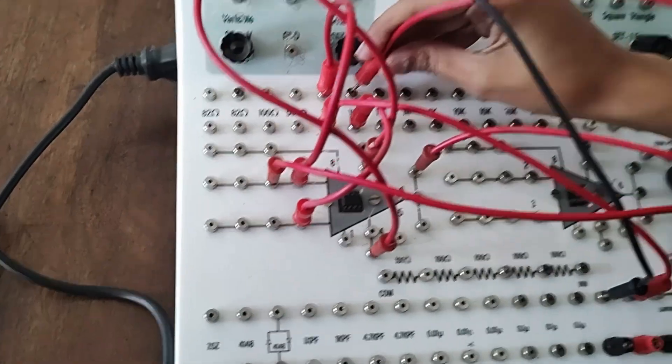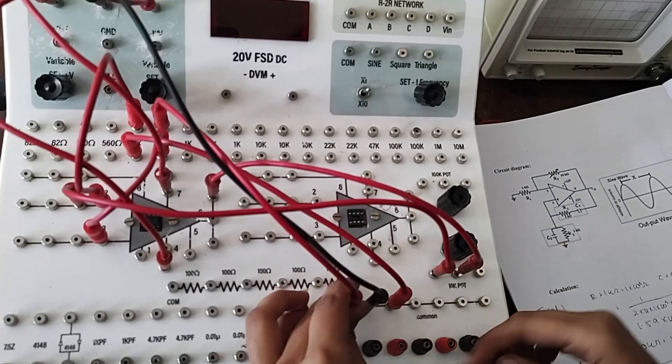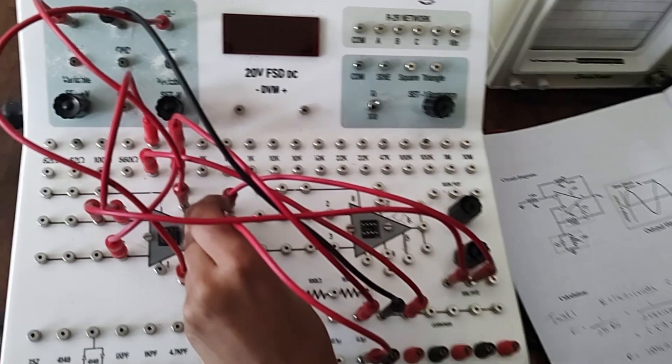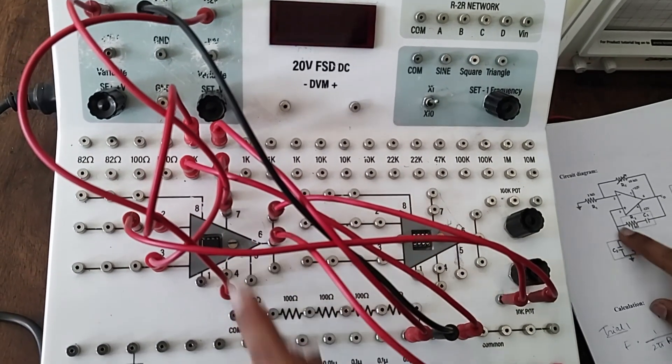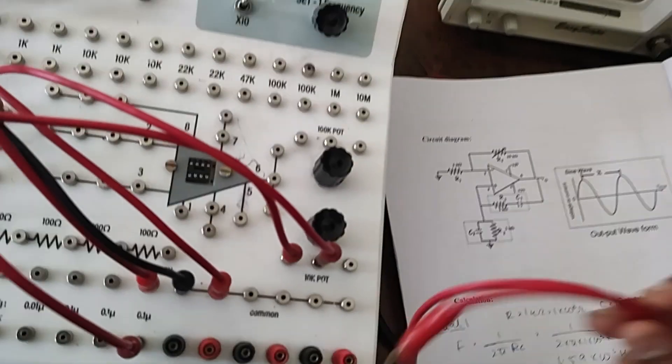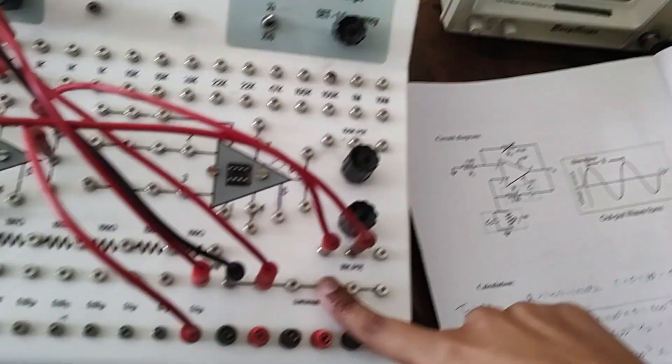From the other end we're going back to pin number 6. So from this end of the 1k we're going to 0.1 microfarad capacitor, and then from the other end back to 6. Now this is the series connection. To do the parallel connection, we're going to do 3 to capacitor, 3 to resistor, the other ends both of them to common ground.